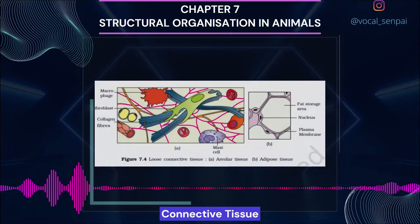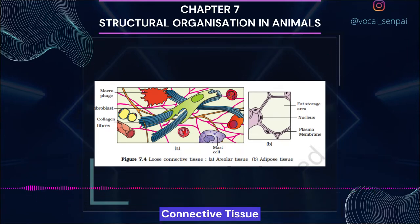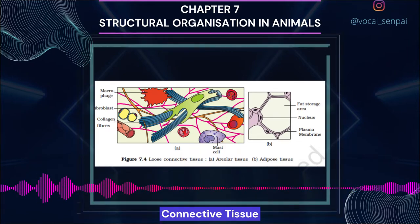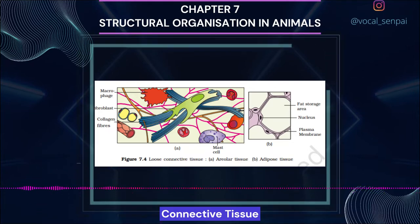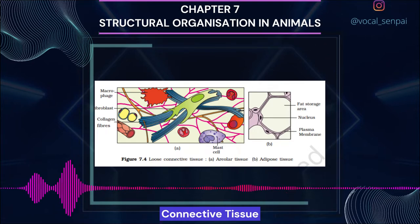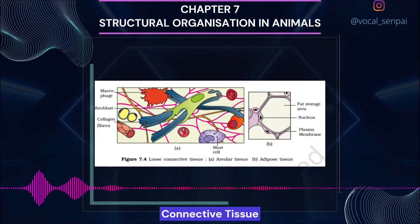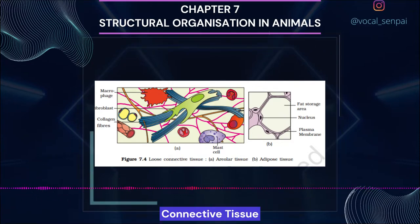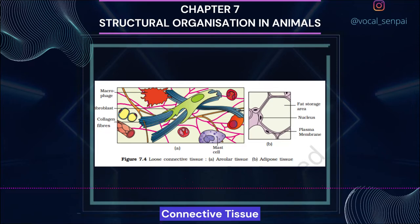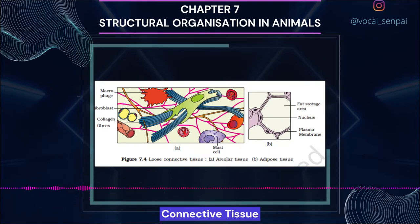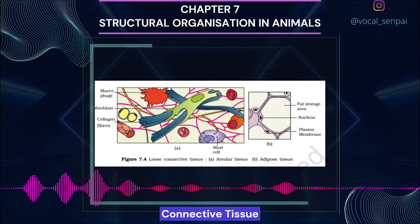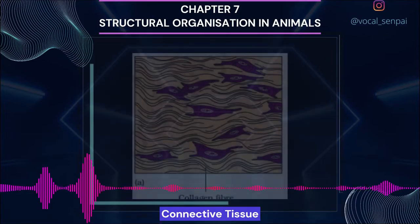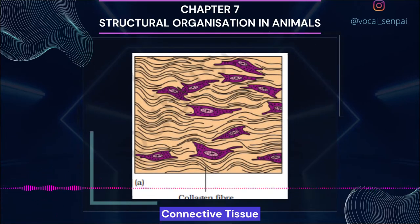Connective tissues are the most abundant and widely distributed in the body of complex animals. They are named connective tissues because of their function of linking and supporting other tissues and organs. They range from soft connective tissues to specialized types including cartilage, bone, adipose and blood. In all connective tissues except blood, cells secrete fibers of structural proteins called collagen or elastin, which provide strength, elasticity and flexibility. These cells also secrete modified polysaccharides which accumulate between cells and fibers and act as matrix or ground substance. Connective tissues are classified into: loose connective tissue, dense connective tissue and specialized connective tissue.